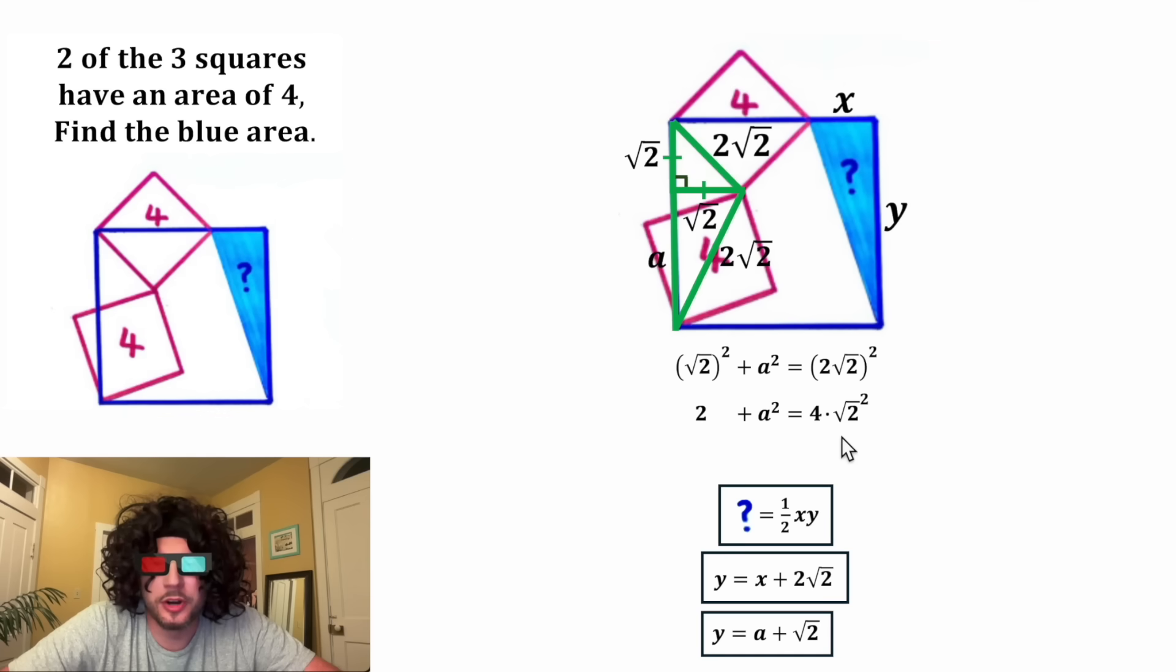Two squared is equal to four. And root two squared is equal to two. Four times two is equal to eight. And then from here, we can subtract two from both sides. That'll give us a squared is equal to six. Next, we can square root both sides. On the left-hand side, since a is a positive distance, the square root of a squared would be a. And now we have a is equal to the square root of six.